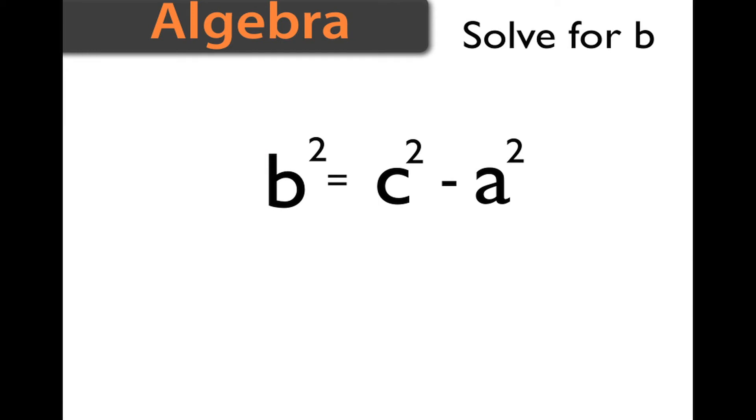Now notice that we have b². We are looking for just b without the square. Anytime you have a square, you can take the square root of it to get rid of it. But as always in algebra, whatever you do to one side, you must do to the other side.